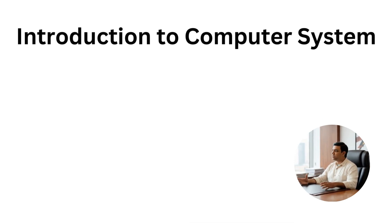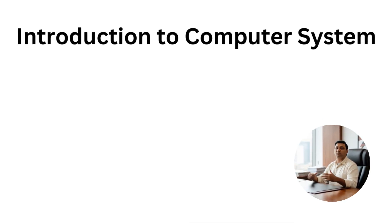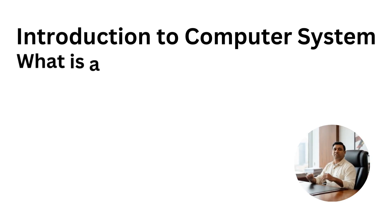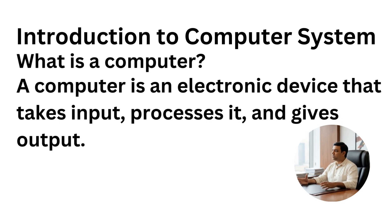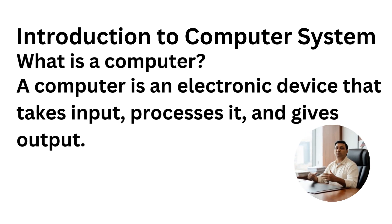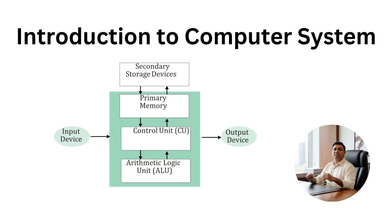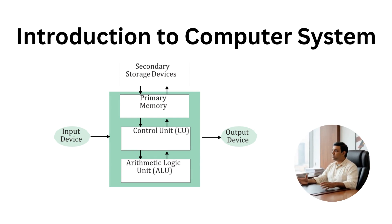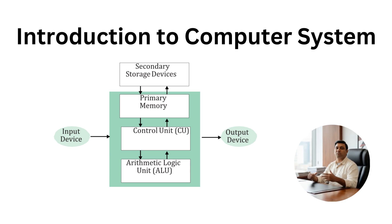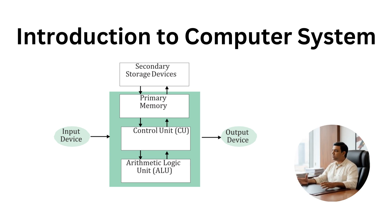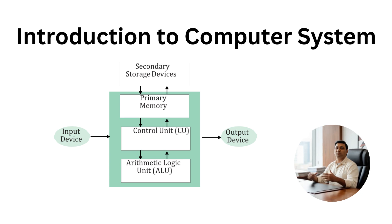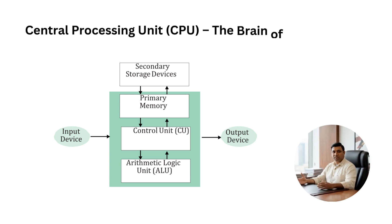Introduction to Computer System. Let's start with a simple question: what is a computer? A computer is an electronic device that takes input, processes it, and gives output. But when we combine the CPU, memory, input and output devices, and software, we get a computer system.